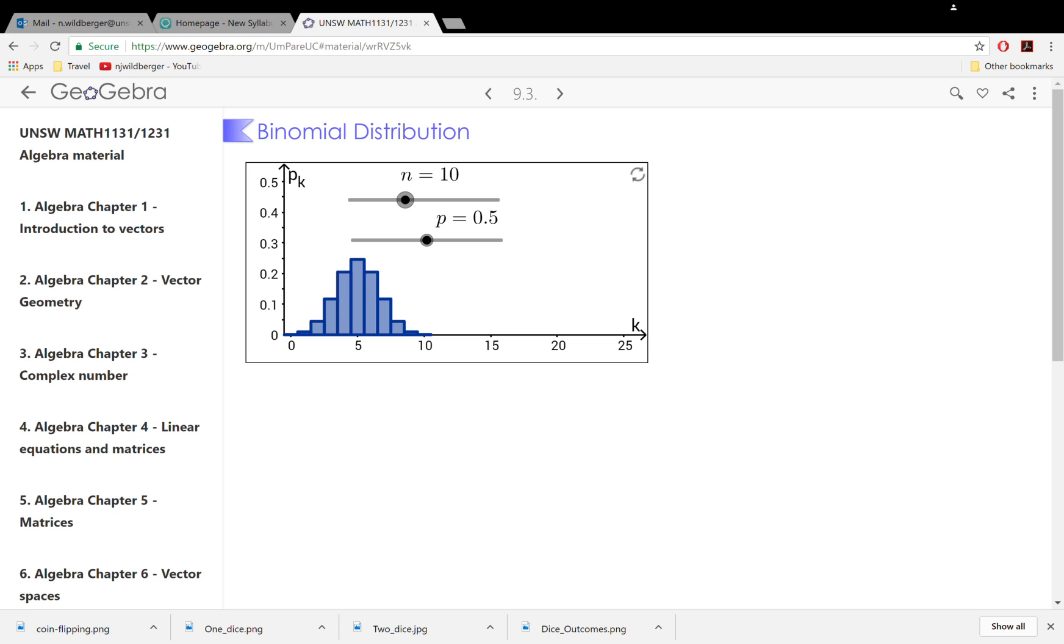Here we have the binomial distribution. This is a GeoGebra app that we created at the University of New South Wales, and it illustrates the binomial distribution, which is one of the most important discrete probability distributions.